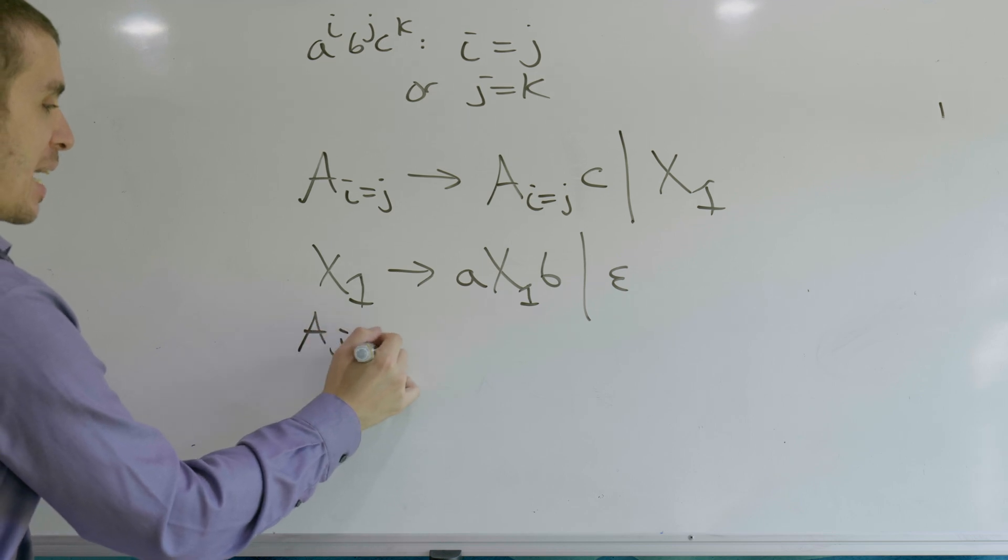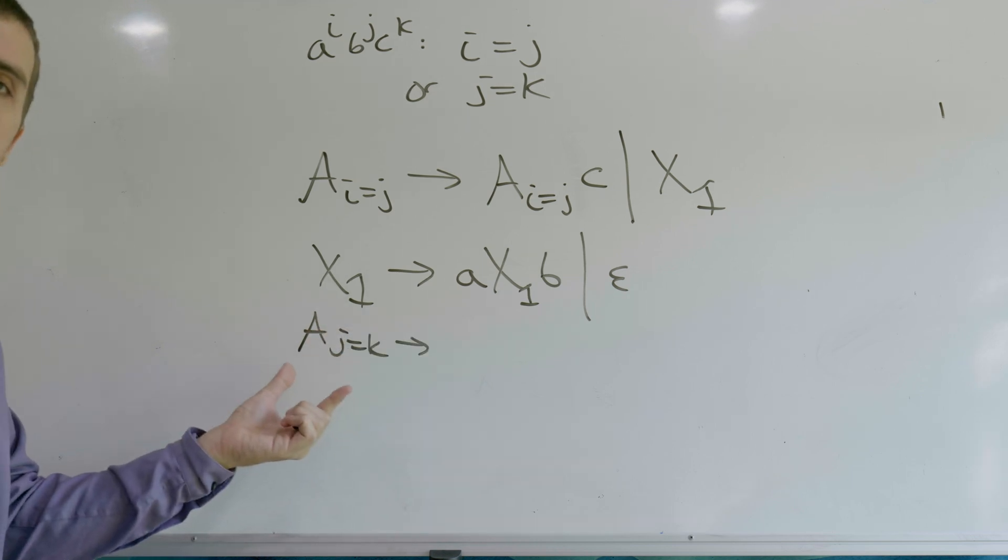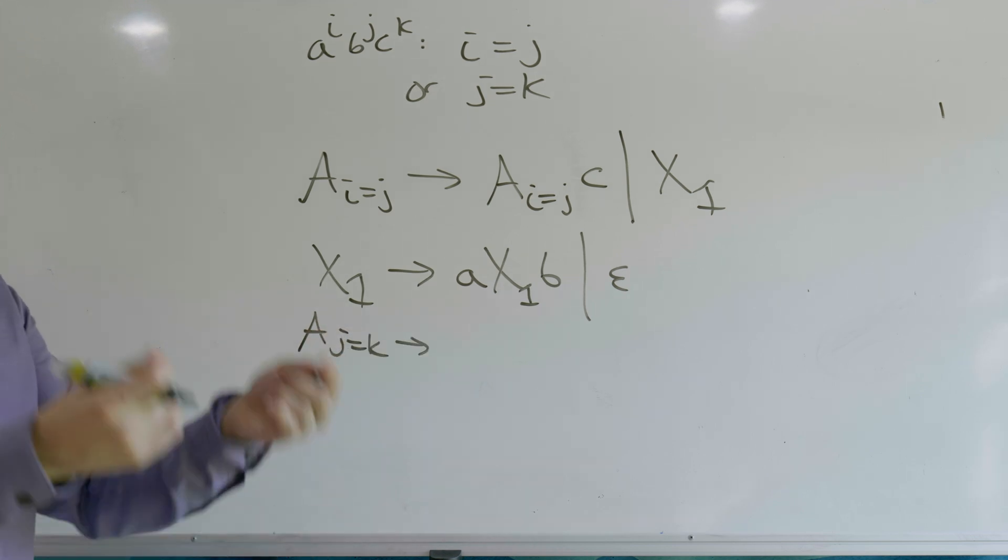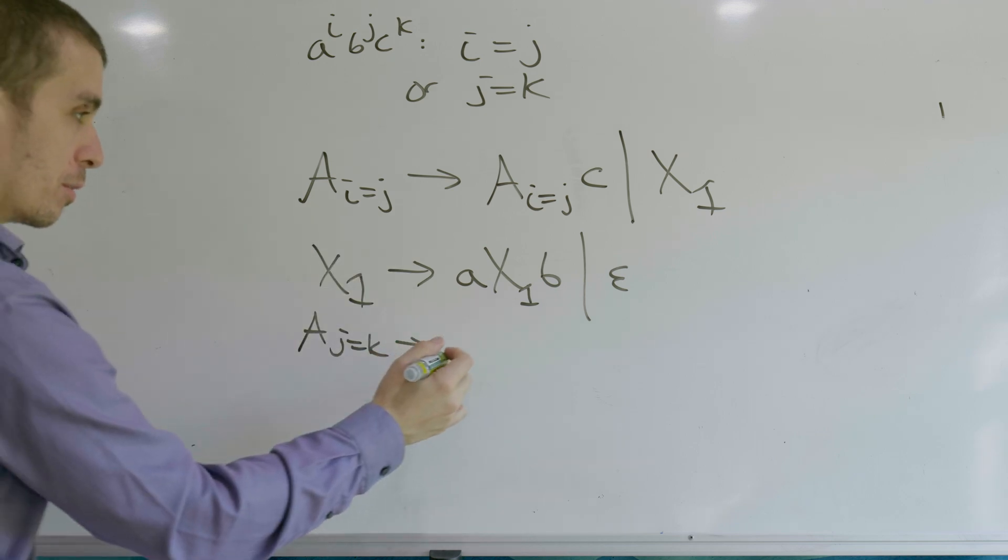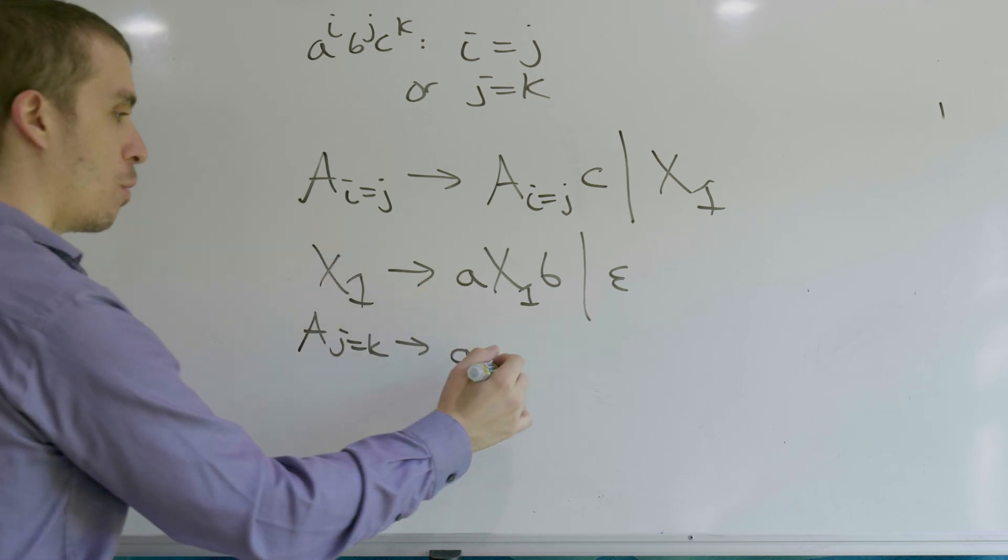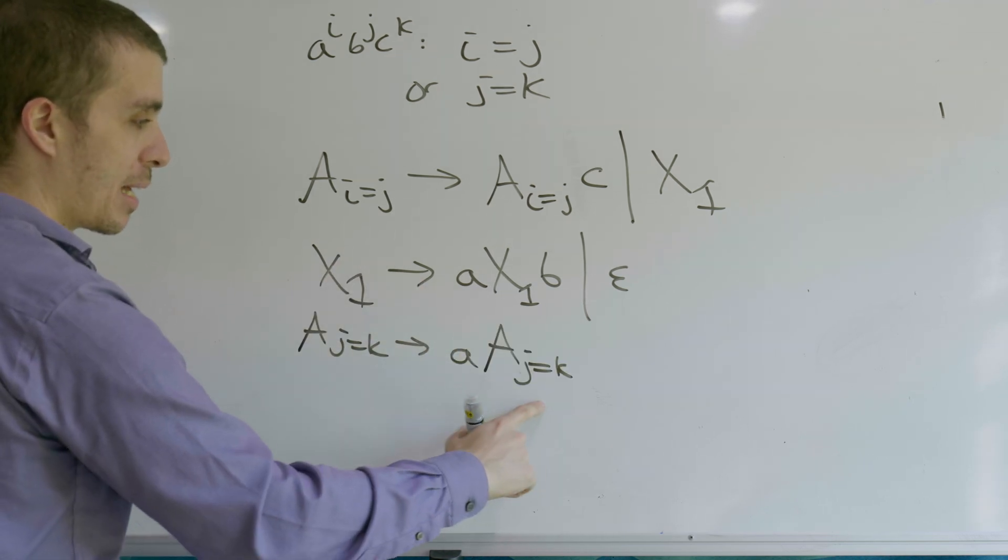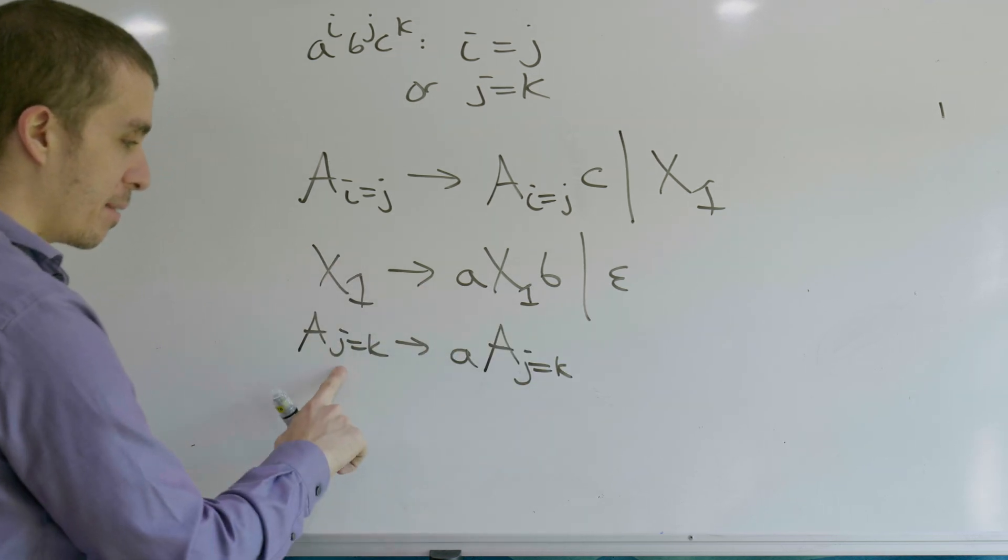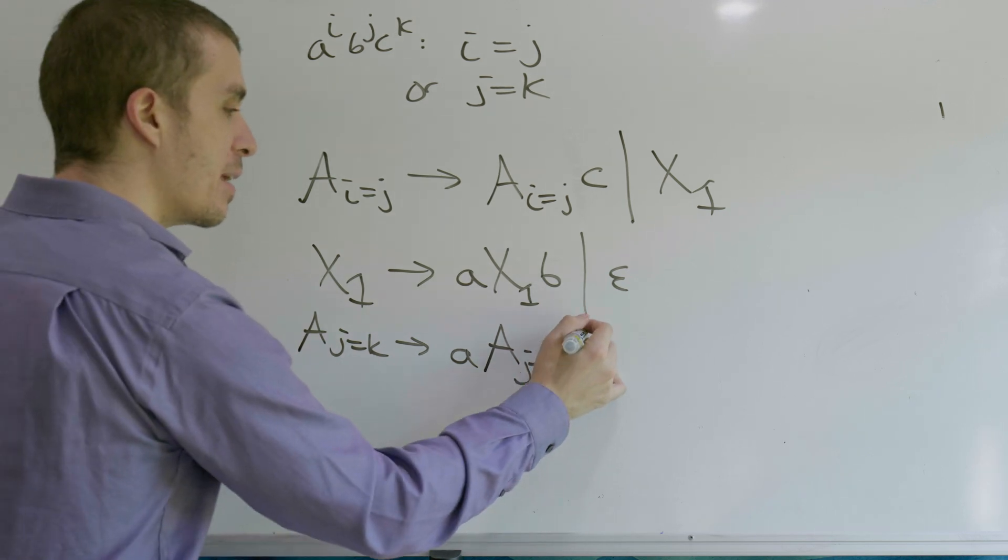For j equals k, we can do a similar thing, but we need to generate the A's at the beginning, not the end. So let's do a similar thing to this, but we've got to reference this variable and not this one. So little a, capital A_j=k. That's referencing this variable. And then once we're done,